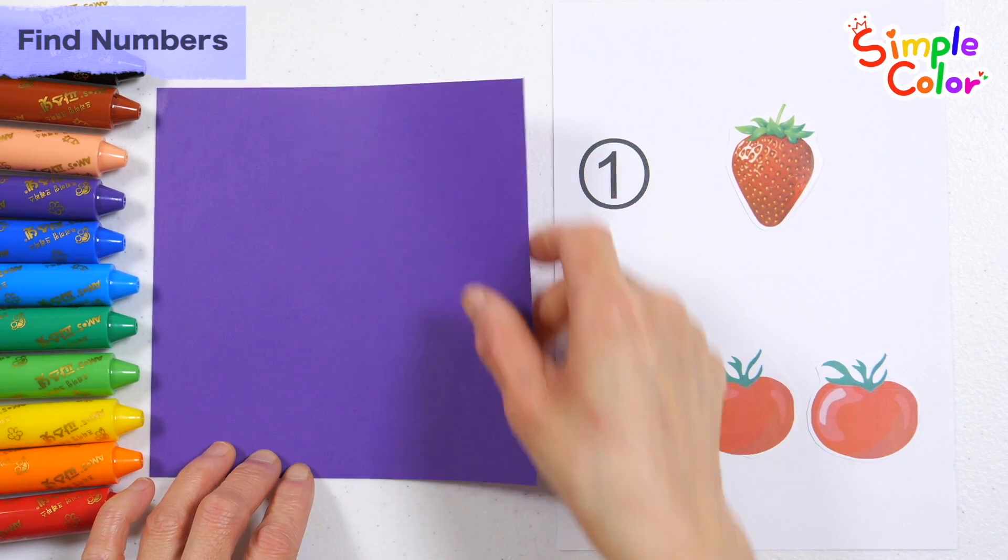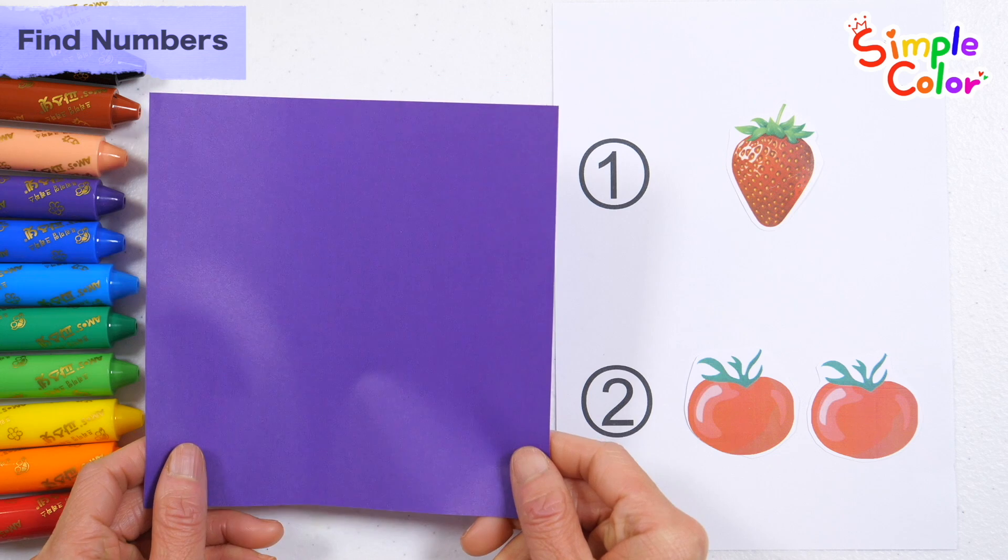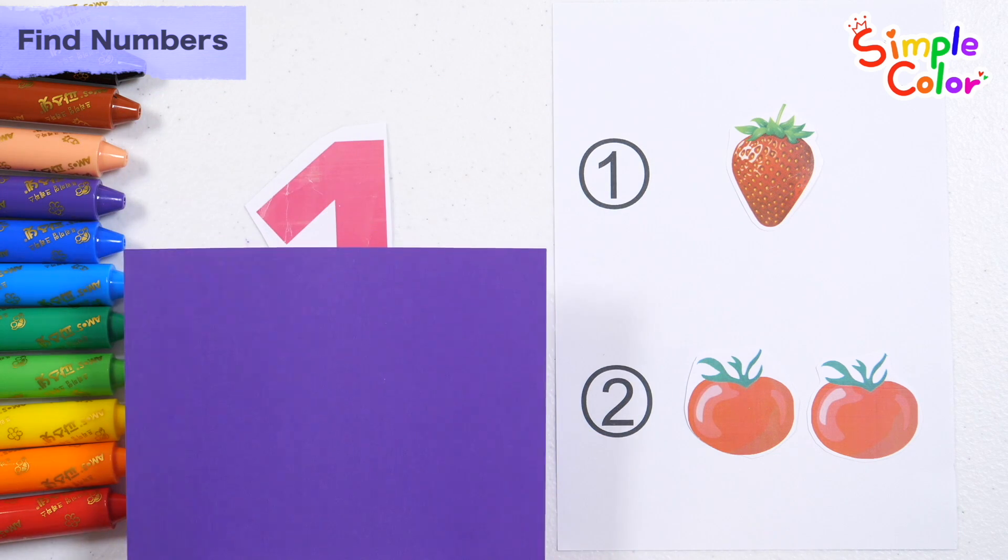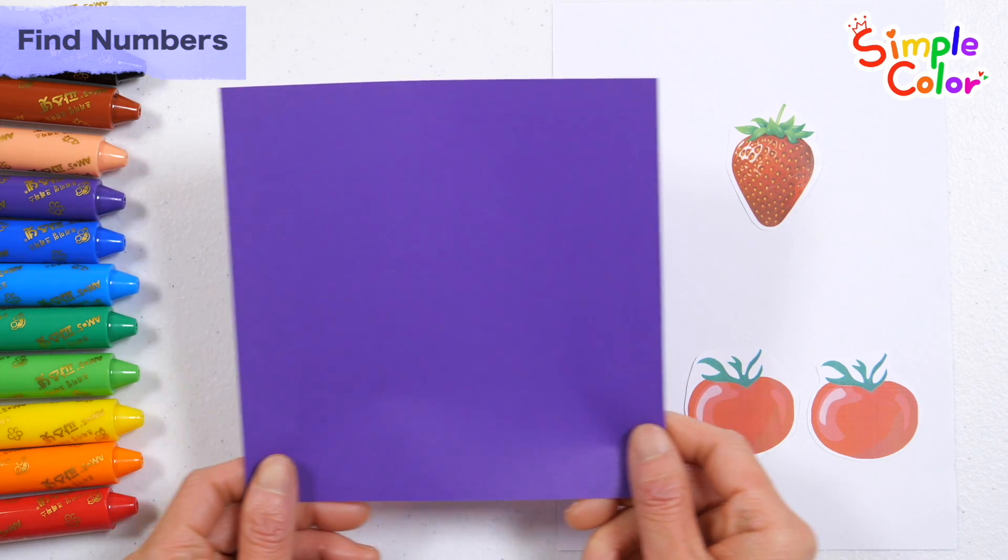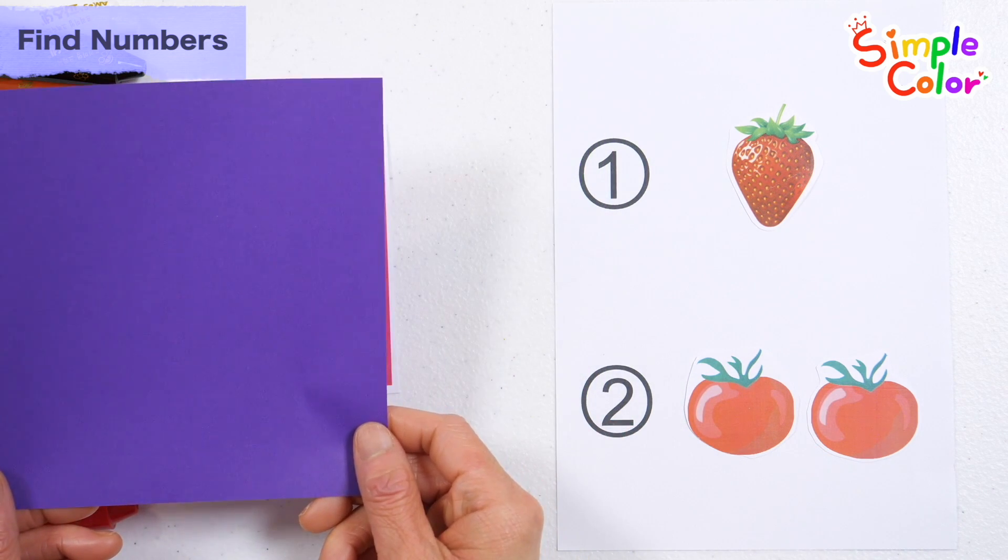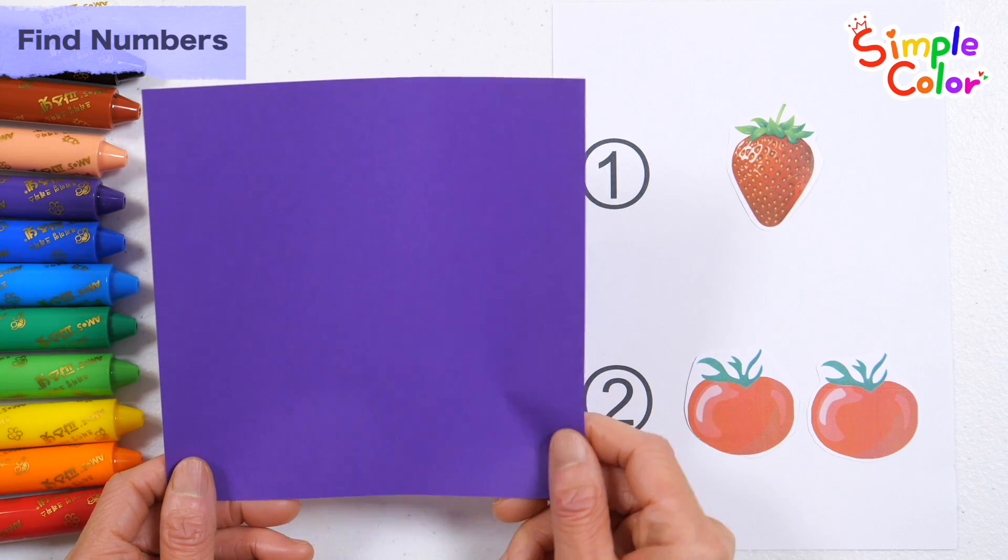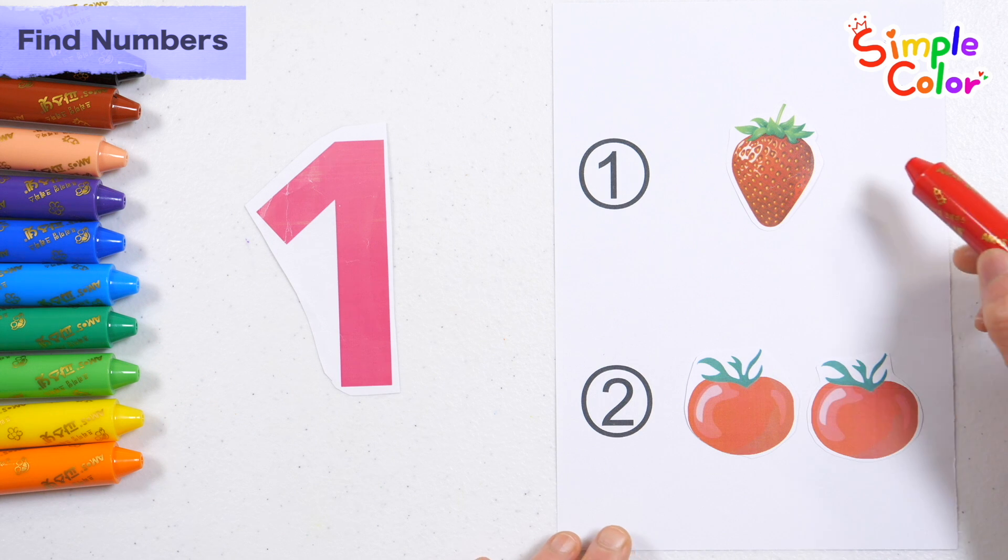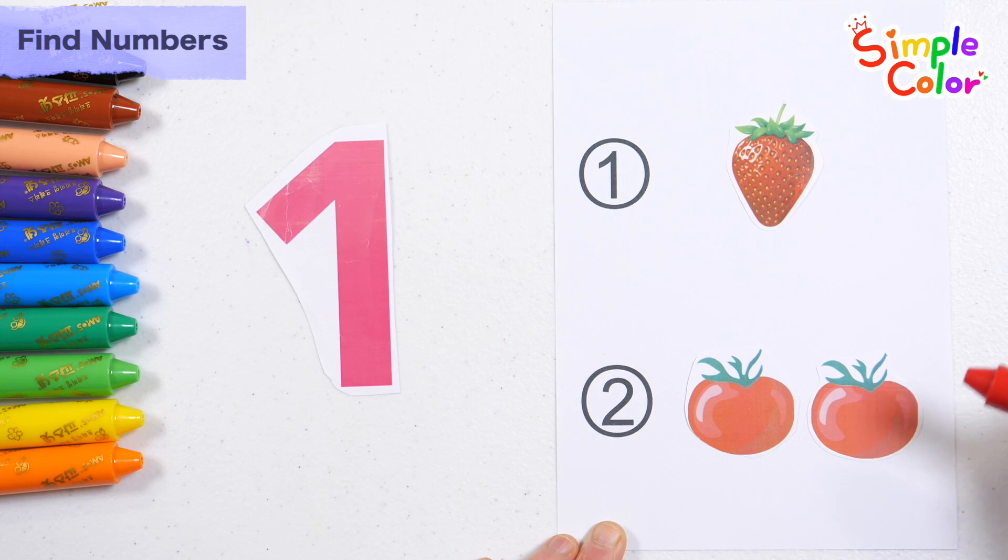Let's guess what number is on the back of the purple paper. Wow! Old MacDonald had a farm, E-I-E-I-O.